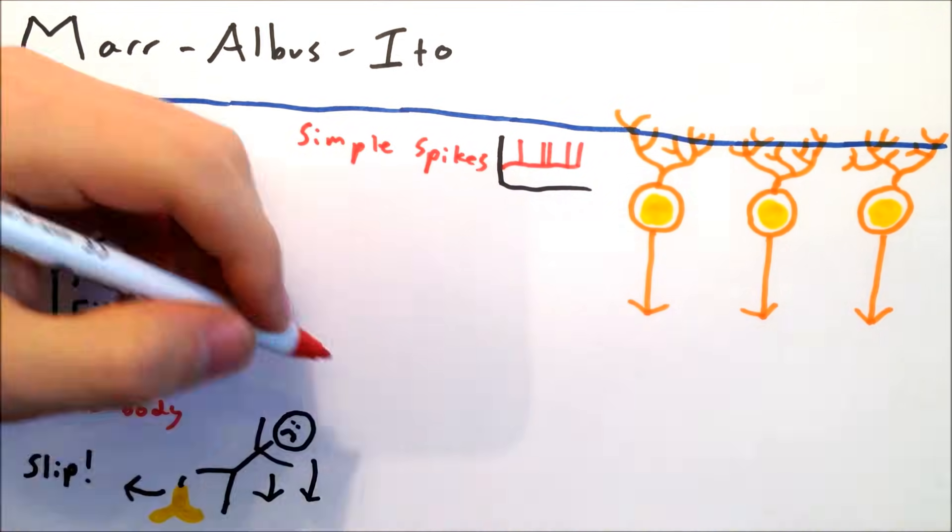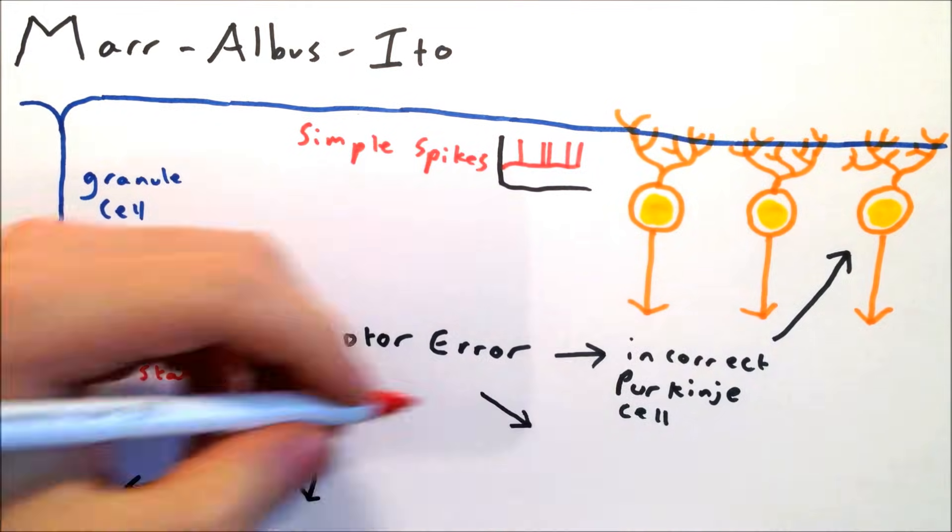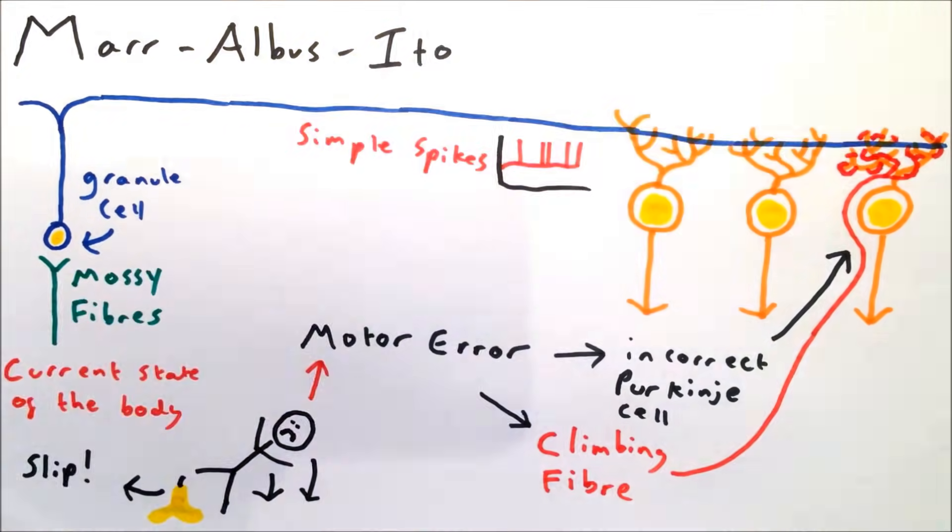If the body has made a motor error, it is assumed that the cerebellum is not coordinating the body correctly, and this is because an incorrect combination of Purkinje cells is activated. When the body makes an error in movement, the climbing fibers fire, providing information about this error.